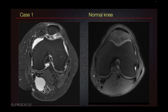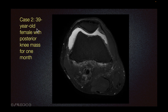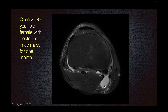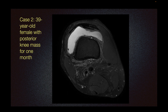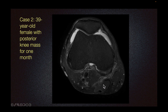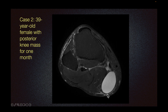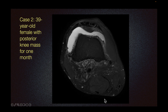Here we can look at the Baker's cyst in our case. This is a normal interface between the medial head of gastrocnemius and the semimembranosus. I have one other case of a 39-year-old female with posterior knee mass for one month. Here we can see a cyst between the medial head of gastrocnemius and semimembranosus. As you go down, this is semimembranosus, this is the medial head of gastrocnemius, and we can see the cyst in between. We also see edema around the cyst, indicating that this cyst has leaked or ruptured.